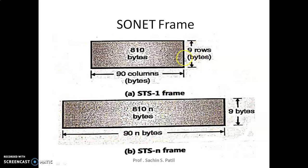STS-1 has 9 rows, 90 columns, 810 bytes, and 810 blocks or elements. We get 810 blocks or elements — 9 rows multiplied by 90 columns — and each block contains 8 bits.